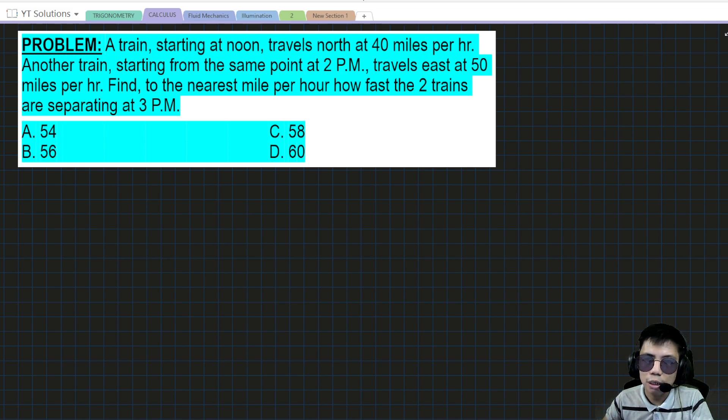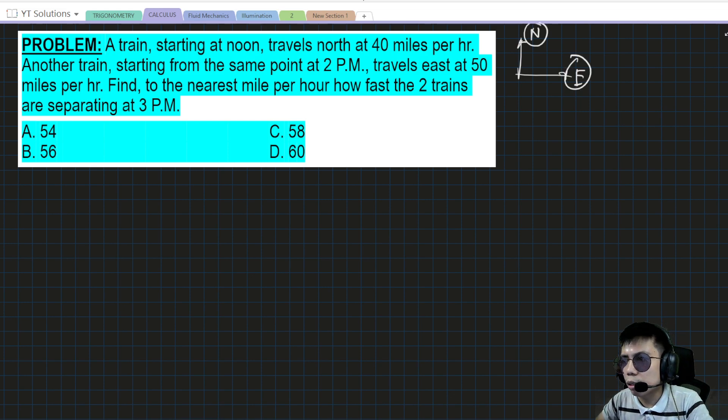In short, what's required is the rate of change of the distance between the two trains at a time of 3 PM. Let's begin by representing the variables. We have two trains traveling, one north and one east.